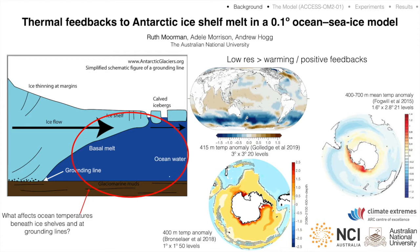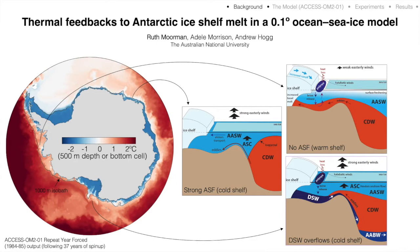In particular this warming is simulated close to the Antarctic continental shelf, and the closeness of this warming signal to the continental shelf has led to the interpretation that this warming is significant for the ice sheet and for future ice shelf melt. One of the problems with interpreting these results is that the coarse ocean components of these models do not resolve the small-scale dynamics on the continental shelf and at the continental shelf margin that tend to dictate the water mass characteristics of shelf waters, and therefore dictate the characteristics of waters that the ice sheet itself comes into contact with.